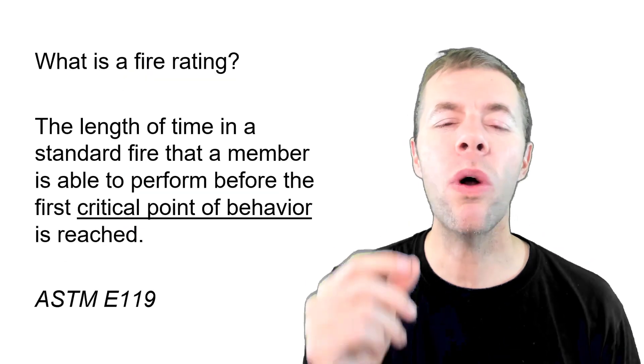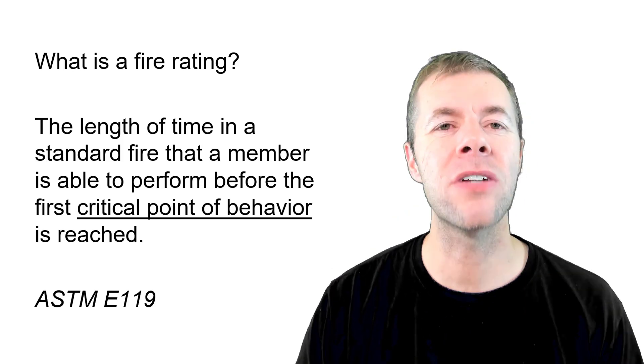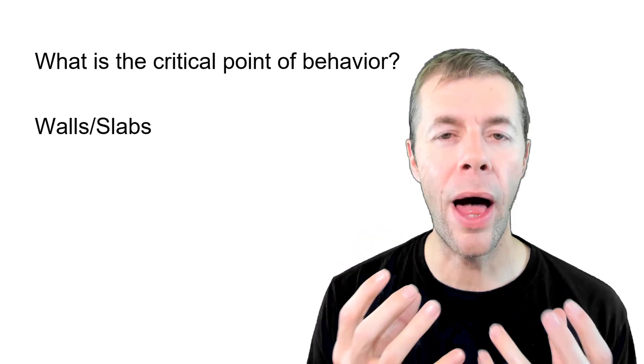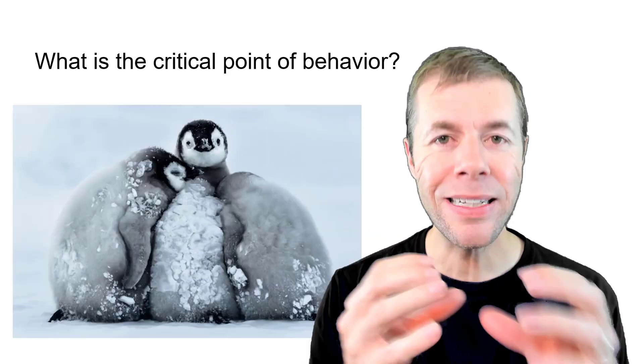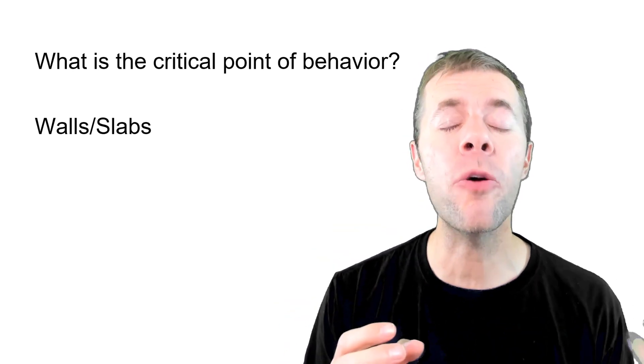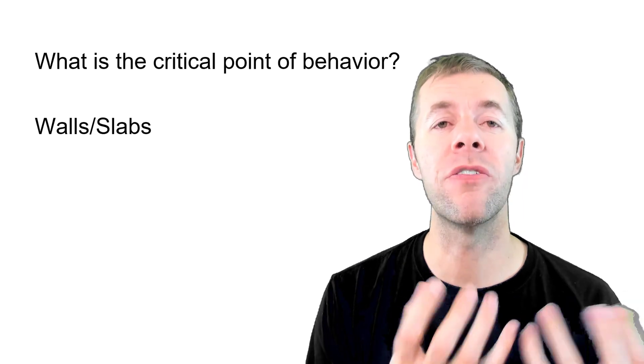Another part of the definition is what is the critical point of behavior? Well, that means different things to different structural systems. If I'm talking about a wall or a slab, what they're trying to do is insulate it so that part of the building may be on fire but it may allow other parts of the building to stay cool or for people to get out of it.